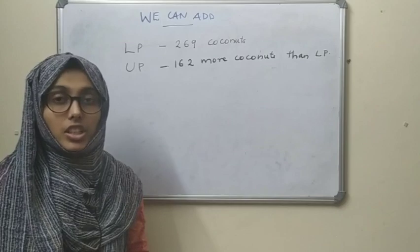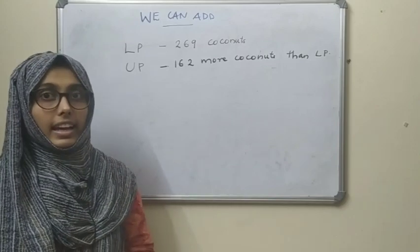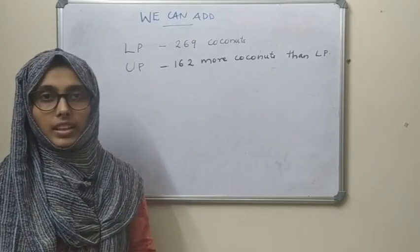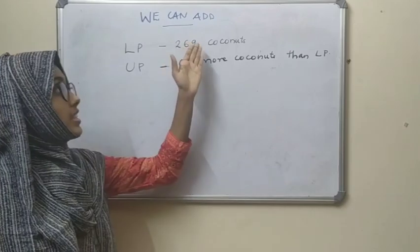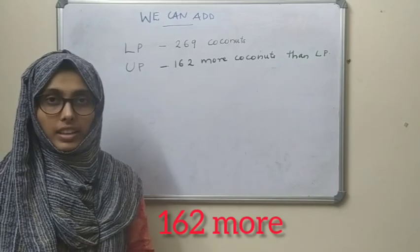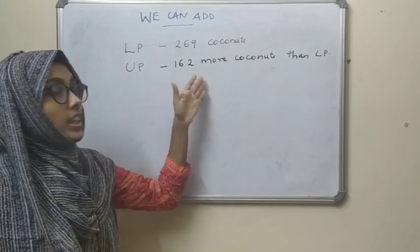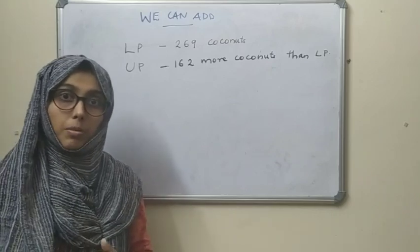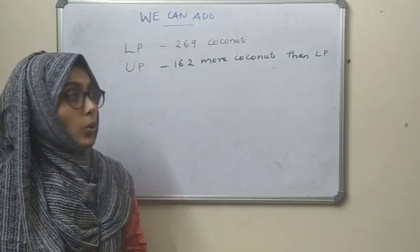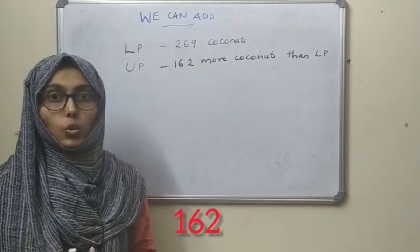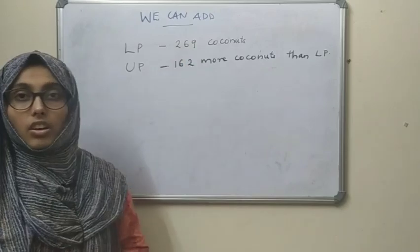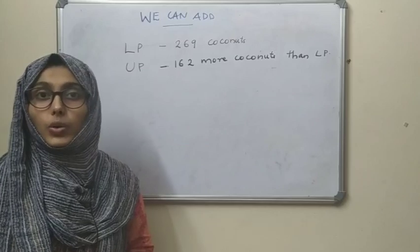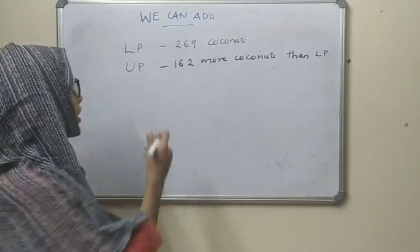So from the LP section, 269 coconuts were given to the school. And the UP section gave 162 more coconuts than the LP section. So that means LP section gave 269 coconuts and UP section gave 162 more. Now we want to find how many coconuts were given by the UP section.